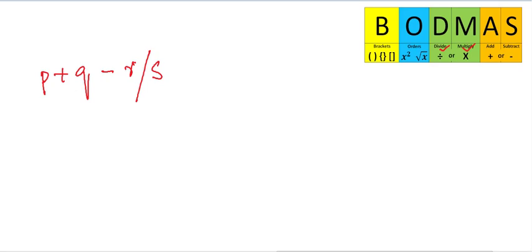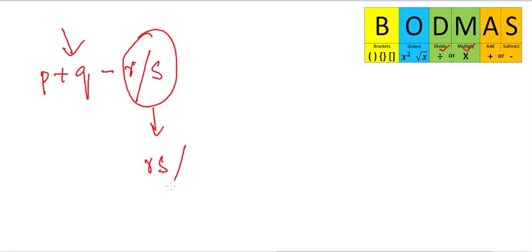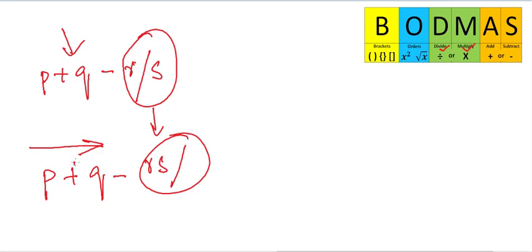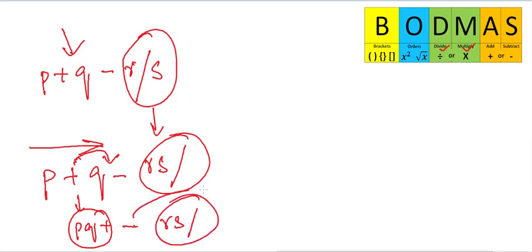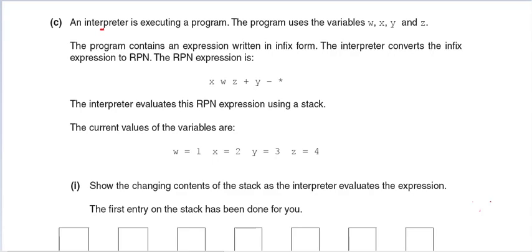For the next expression P plus Q minus R slash S: solve division first, so R slash S becomes RS slash. Moving left to right, the first operator is plus, so P plus Q becomes PQ plus. Then the minus operator moves to the right, and our final answer is PQ plus RS slash minus.